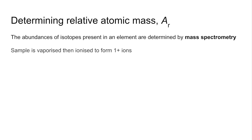So quickly, how do they determine relative atomic mass? So they do it by something called mass spectrometry. So I'll quickly run through the steps on this. So the sample needs to be vaporised, and then it's ionised to form 1+ ions. Once it's got the charge on, it can be accelerated through the spectrometer.